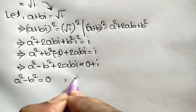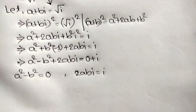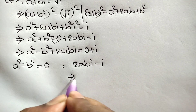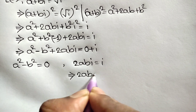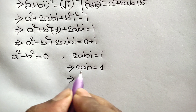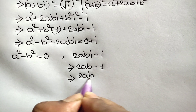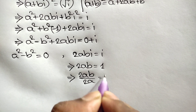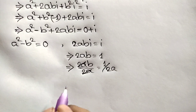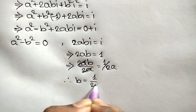From a squared minus b squared equals zero, we get a squared equals b squared. From two ab equals one, dividing both sides by two a, we get b equals one over two a.